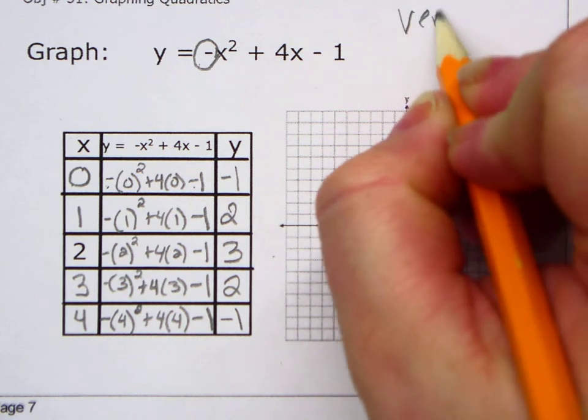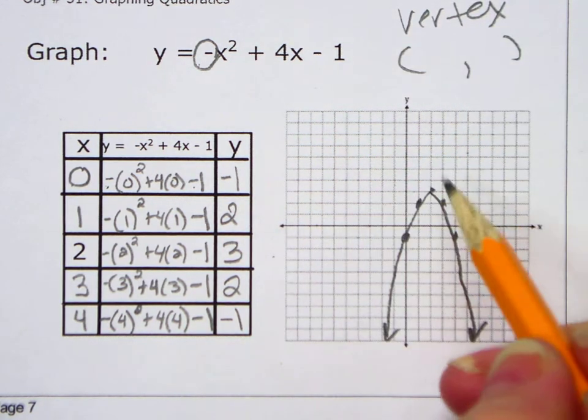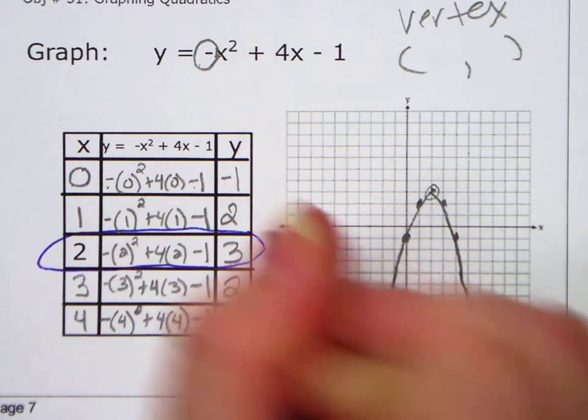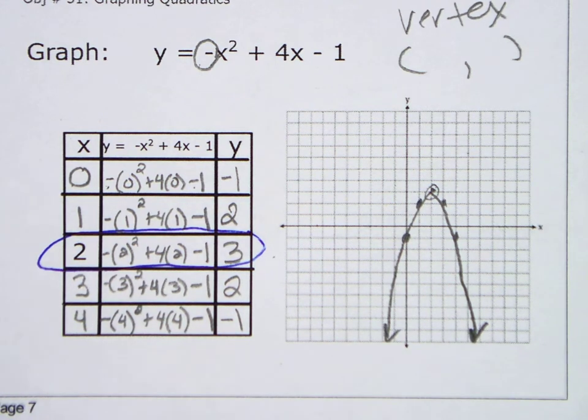What's the vertex of my parabola? This point. What is that point? That's your middle 1, 2, 3. Right here in the middle, that's always your vertex. We always put that in the middle. So my vertex is 2, 3.